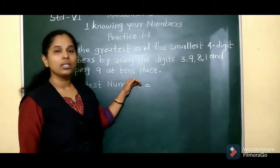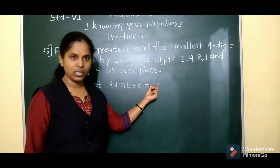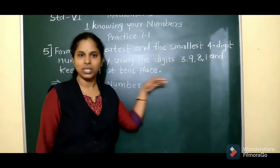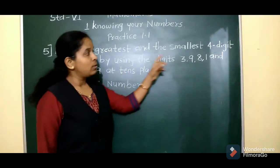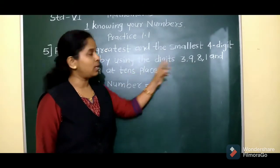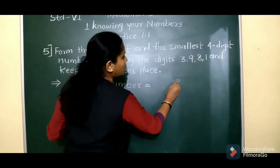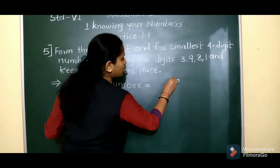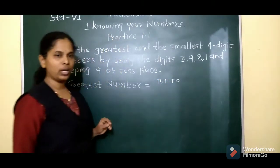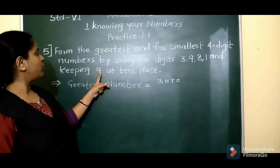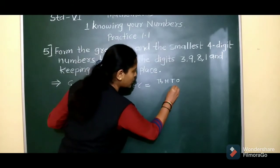We have to arrange the digits in descending order — meaning we write the bigger digit first, then smaller, then smaller, then smallest, from bigger to smaller. Now there is one condition: 9 should be at the tens place. For a 4-digit number, the places are: ones, tens, hundreds, and thousands. So 9 we will write at the tens place first.